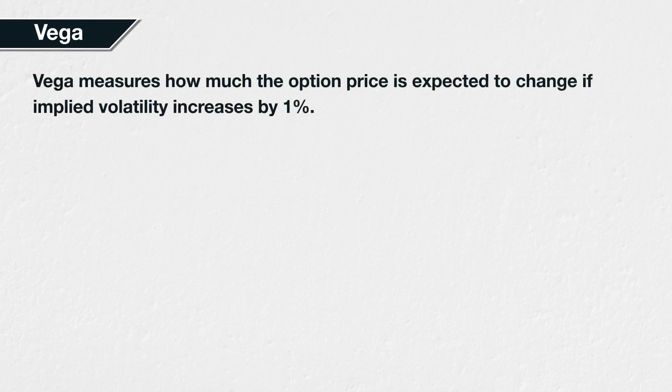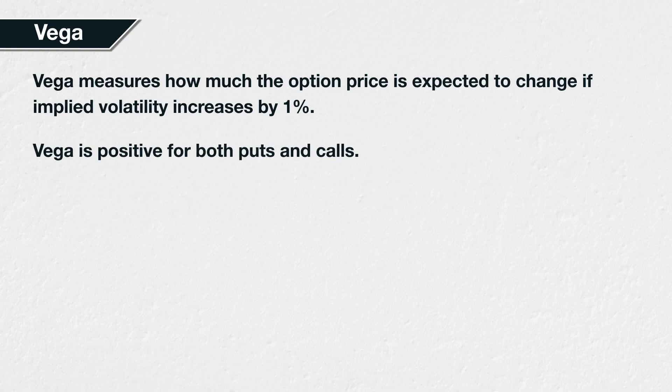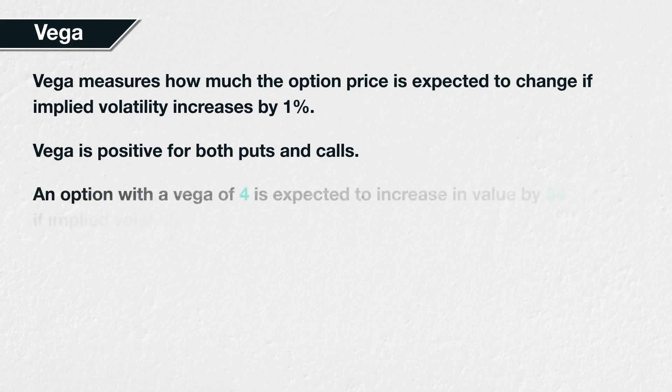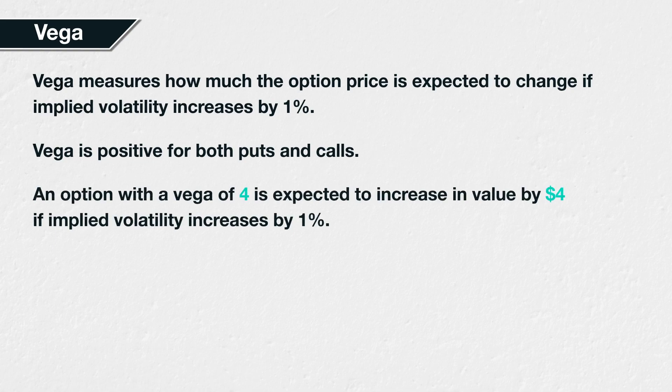Vega is a measure of the sensitivity of the option price to implied volatility. It is how much the option price is expected to change for a 1% increase in implied volatility. Vega is positive for both puts and calls, because all other things being equal, higher implied volatility means higher prices for all options. An option with a vega of 4 is expected to increase in value by $4 if implied volatility increases by 1%.